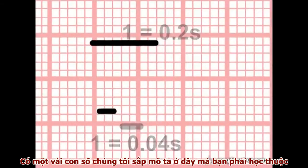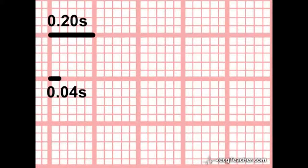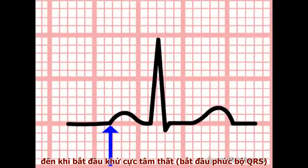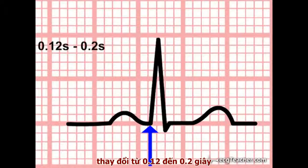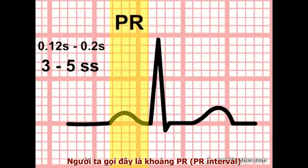There are a few numbers coming up now which you simply must learn. In a normal heart, the time between the onset of atrial depolarisation — the beginning of the P wave — and the onset of ventricular depolarisation — the beginning of the QRS complex — varies between 0.12 and 0.2 seconds, or between three and five small squares. This is the PR interval.